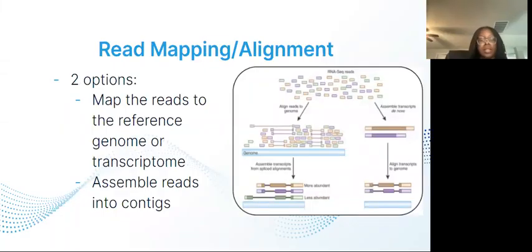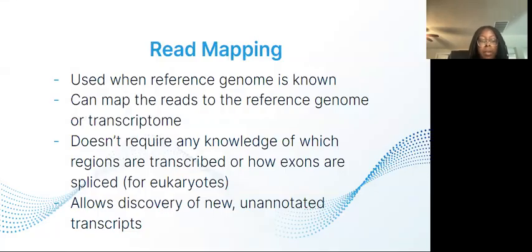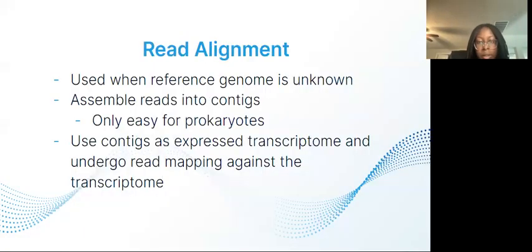Another way scientists compare genome sequences is with read mapping and alignments. As shown in the diagram, read mapping aligns the reads on a reference genome, allowing mismatches. Read mapping is used when scientists know the reference genome. It maps the reads to the genome or transcriptome. With read mapping, knowledge of the transcribed or spliced regions in eukaryotes is not required. Overall, read mapping allows for discovery of new and unannotated transcripts.